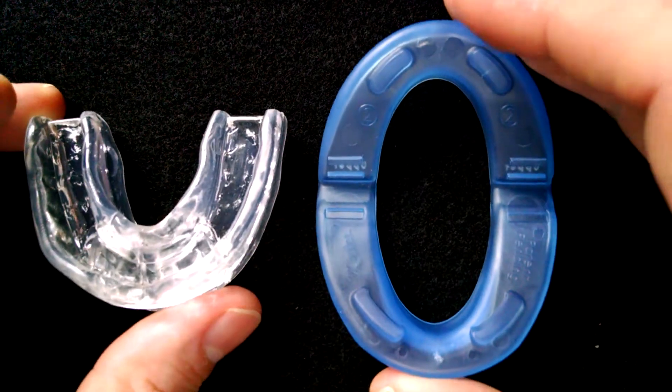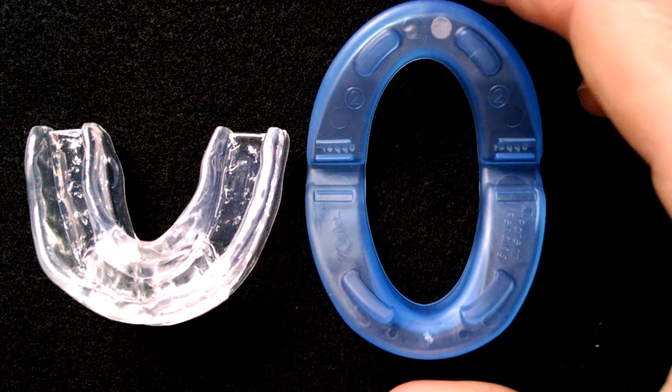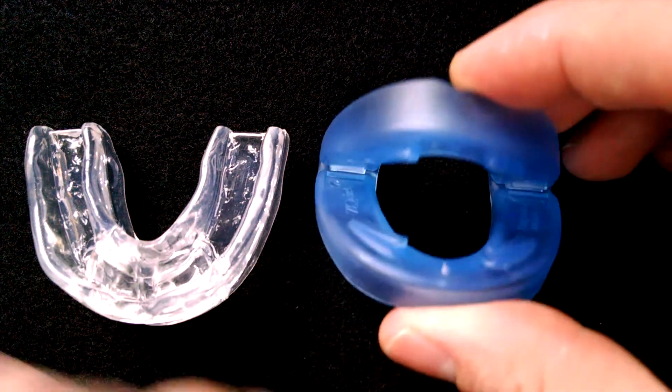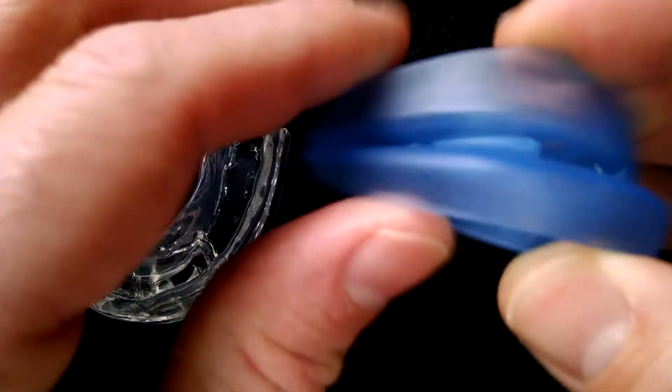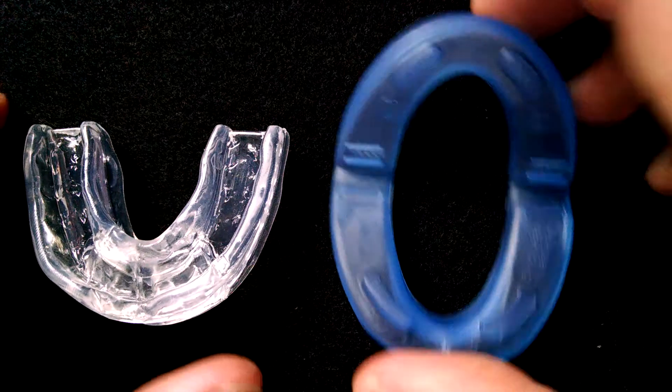This is the Rip Snore and Z-Quiet. They are two totally different designs. The Z-Quiet has a hinge design. It is a mandibular advancement device. It has a large breather hole here at the front and it's ready to use straight out of the box.